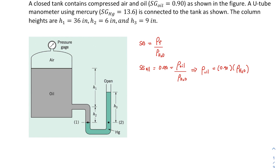We do the same for mercury. The specific gravity of mercury is 13.6, which equals the density of mercury divided by water. Following the same logic, the density of mercury is just 13.6 times the density of water.